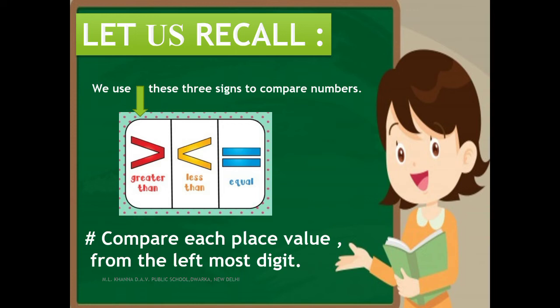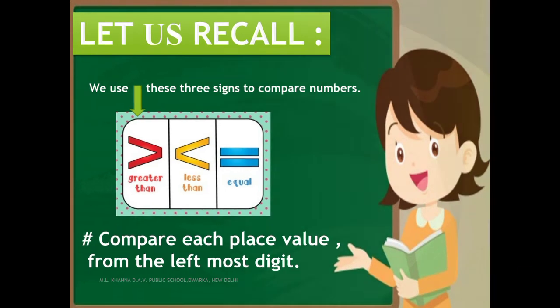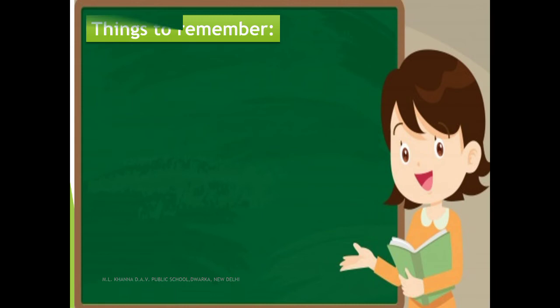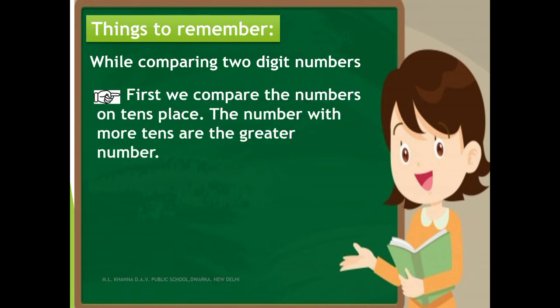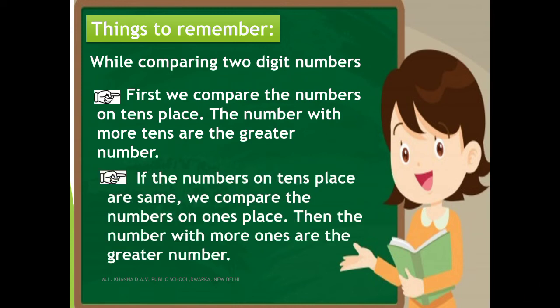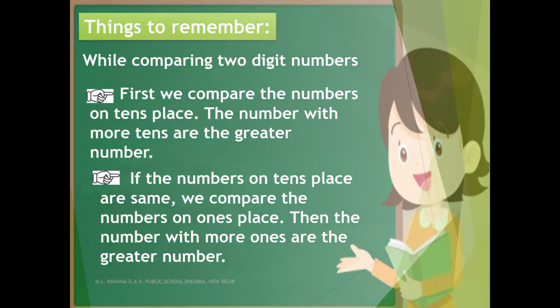Now, children, I will tell you how to compare two-digit numbers. There are two important points to keep in mind. First, we compare the digits at the tens place — the number with more tens is the greater number. Second, if the digits at the tens place are the same, we compare the digits at the ones place — the number with more ones is the greater number. Now let us see the examples.